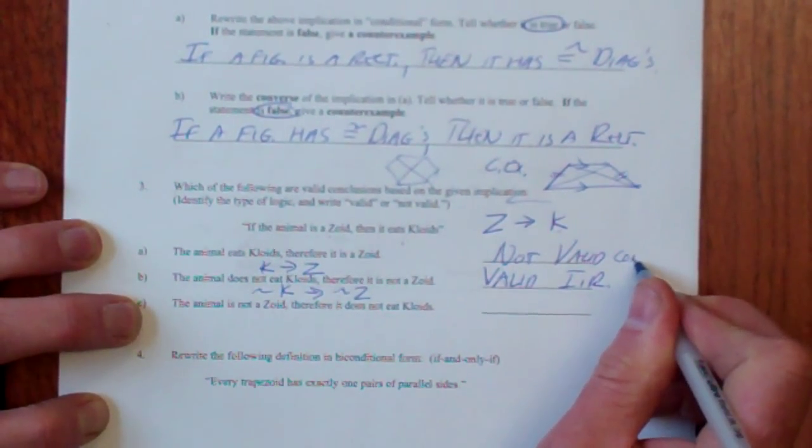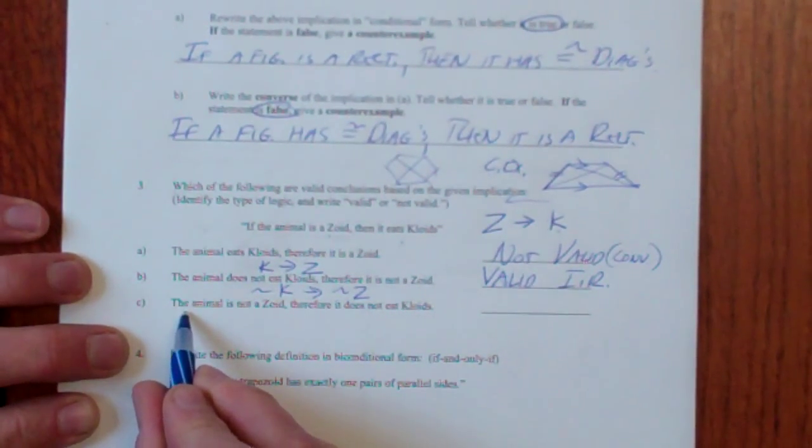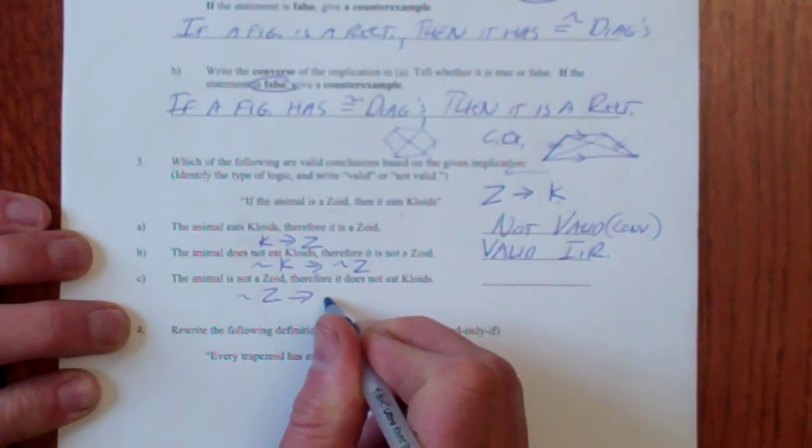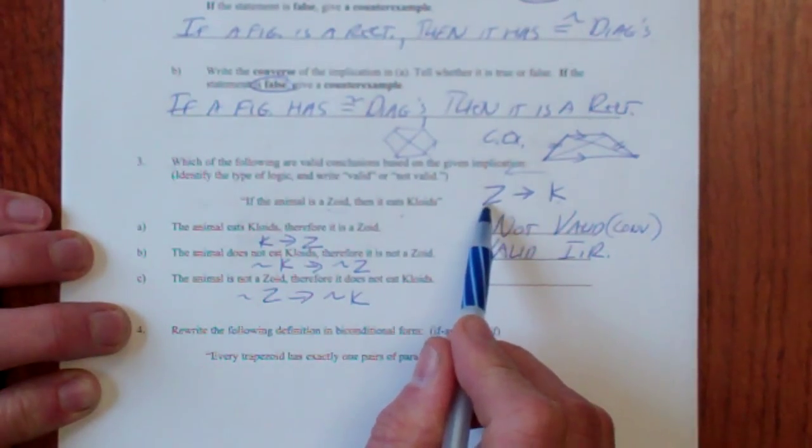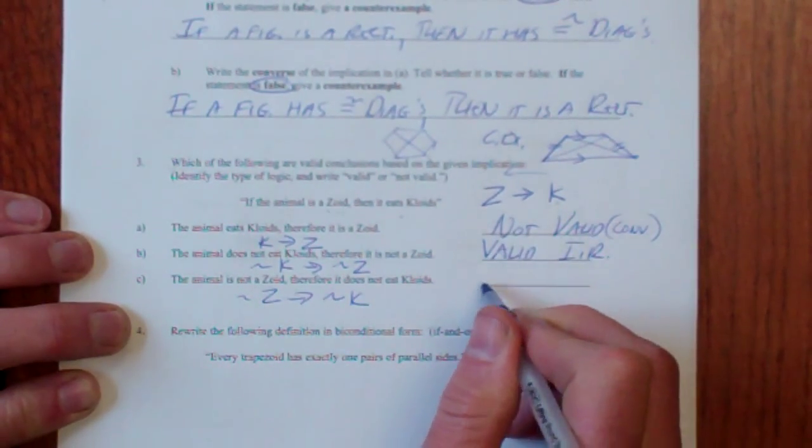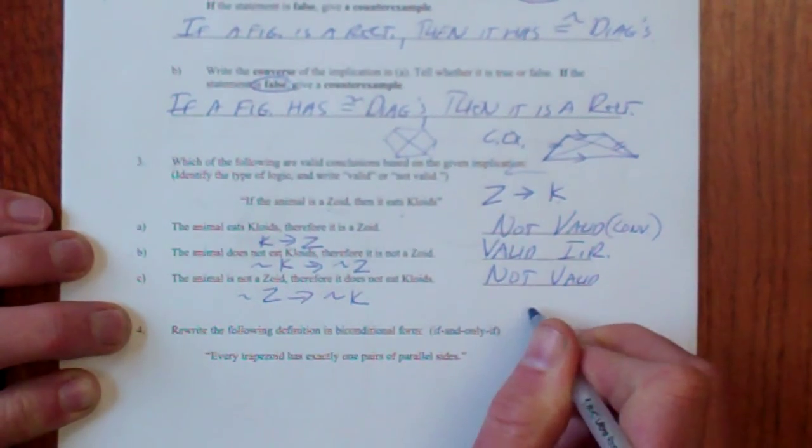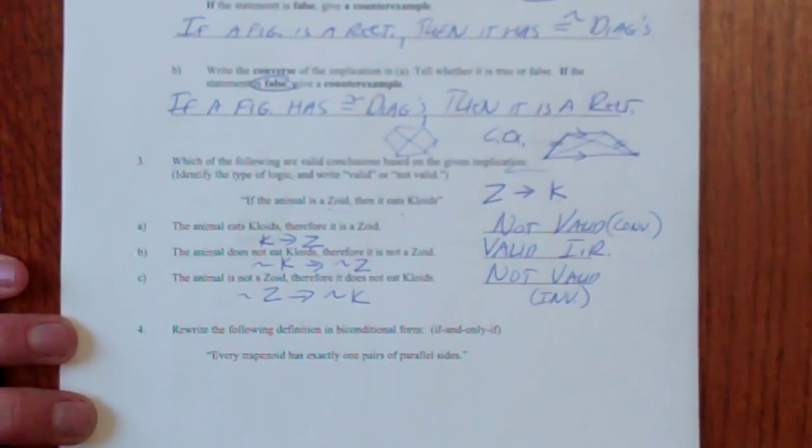That's converse. I don't know if I asked you to write that down, but that's what that is. The animal is not a zoid, therefore it does not eat cloids. Nonsense. But also invalid, because that's the inverse. So that's not valid. And that's because it's the inverse. And inverses are not valid automatically.